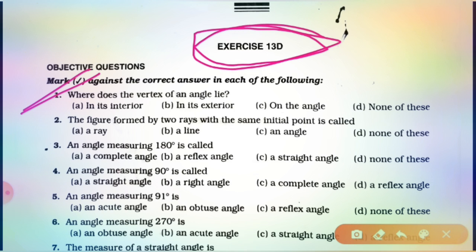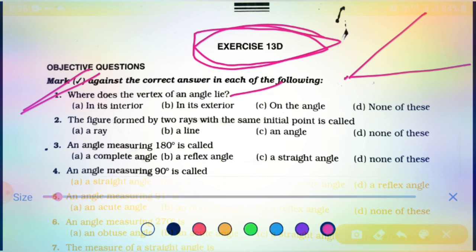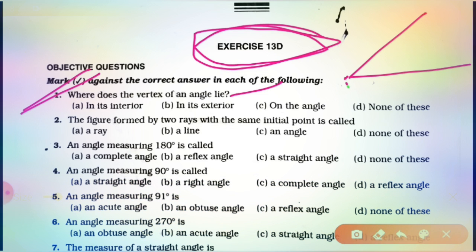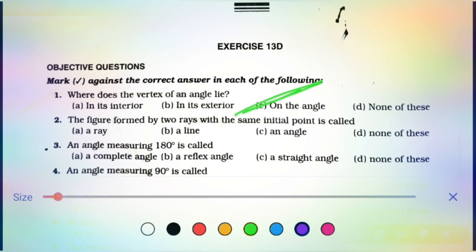Where does the vertex of an angle lie? Students, here it's an angle and here it's the vertex. Here A is vertex, and there are two rays. So, students, its answer is: on the angle. Where the vertex lies — on the angle. Now, students, proceed to the next question.